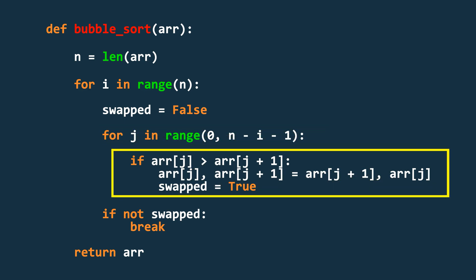Within this inner loop, if any two elements are found to be out of order, we swap them and set swapped to true, indicating that at least one change has occurred.